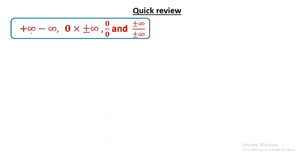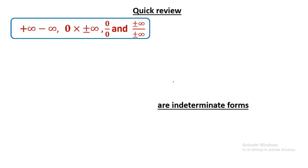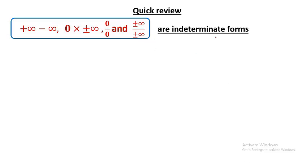As we have learned in grade 11, the forms infinity minus infinity, 0 times either plus or minus infinity, 0 over 0, and plus or minus infinity over plus or minus infinity are known as indeterminate forms.